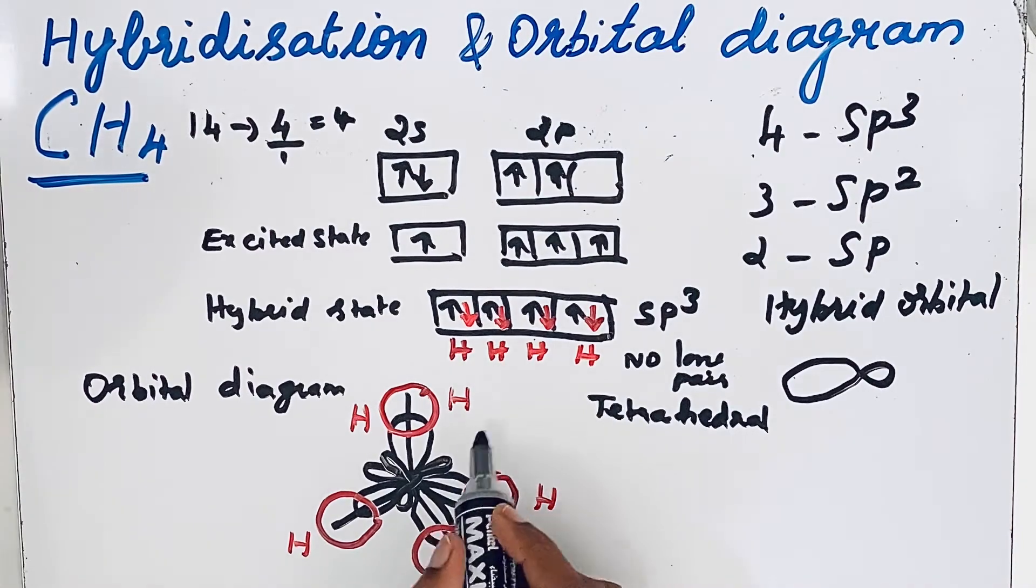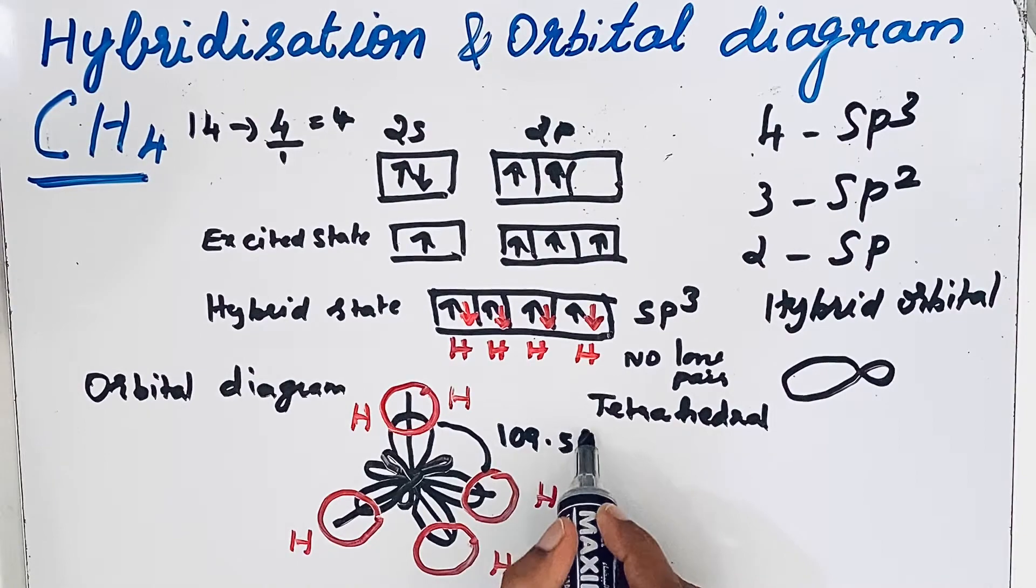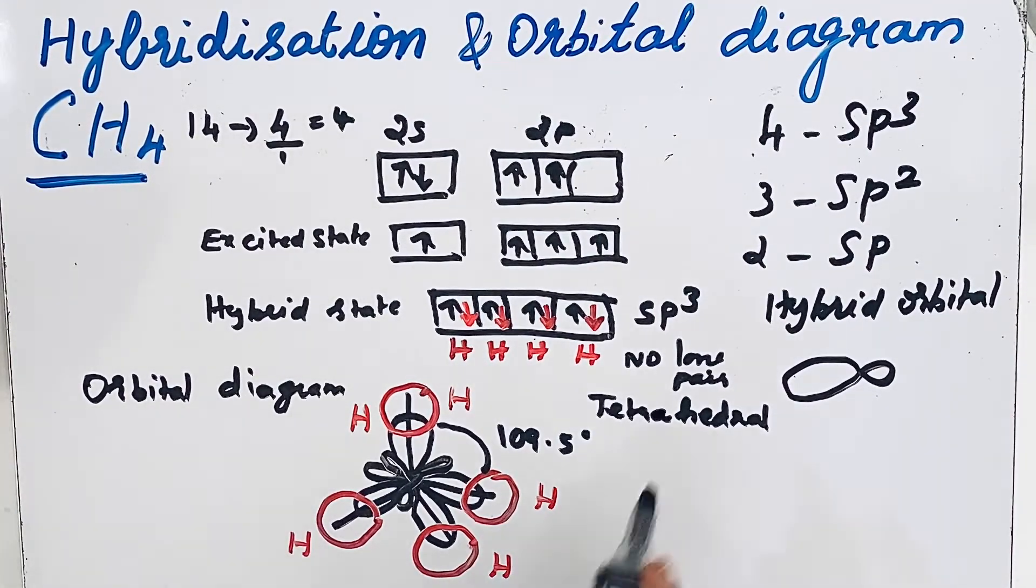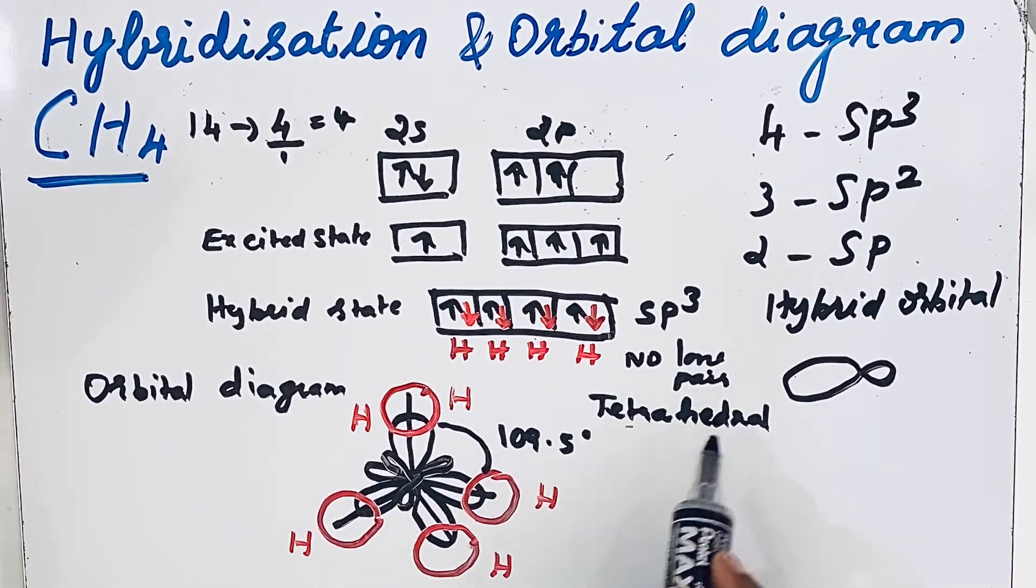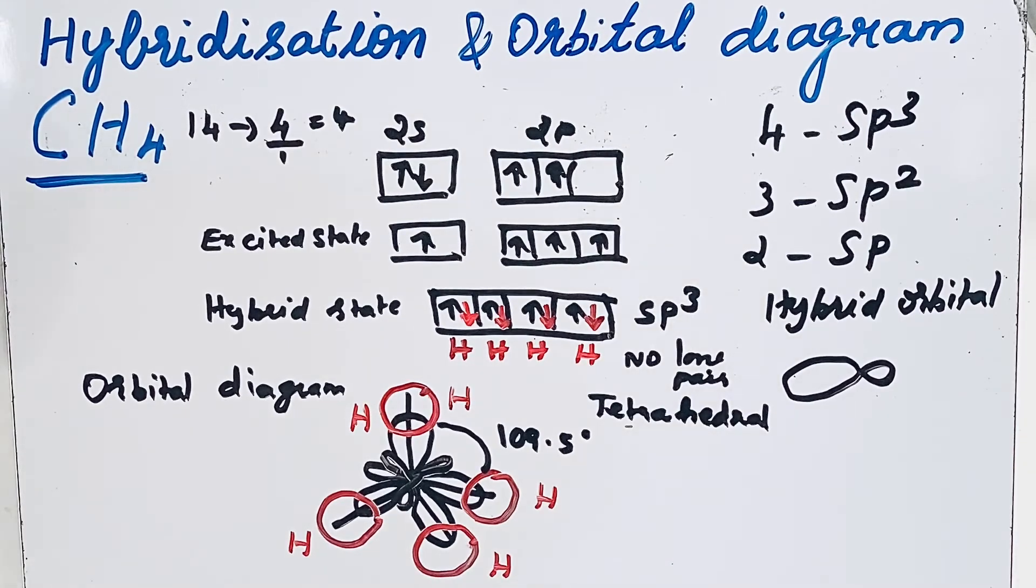The bond angle is 109.5 degrees. So for methane the hybridization is sp3, no lone pair, the shape is tetrahedral, and the bond angle is 109.5 degrees. Thanks for watching.